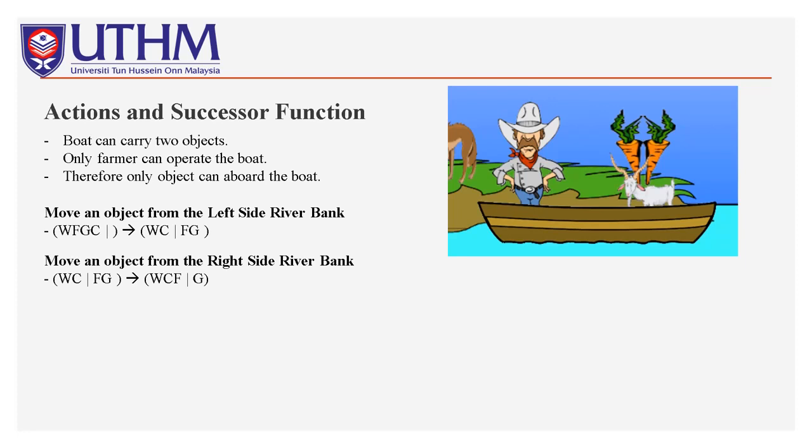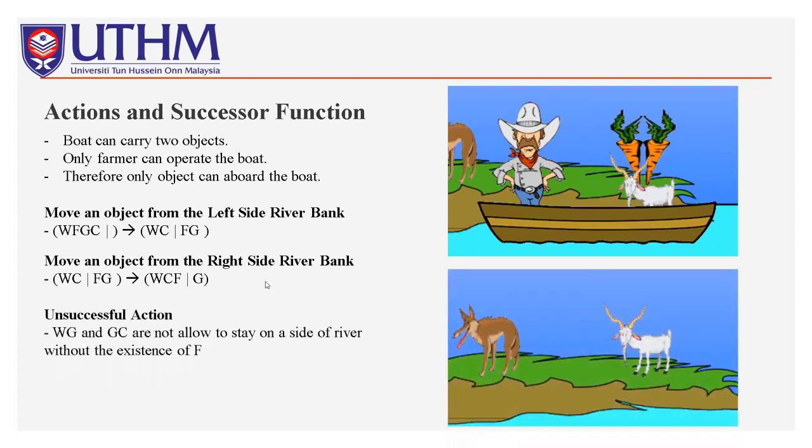If you want to move an object from the left side to the right side of the river bank, it must stay along with the farmer. So WFGC slash becomes WC slash FG, or maybe CG slash WF, as long as F is on the right side. And if we want to move an object from the right side of the river bank back, we also need the farmer to operate the boat. For our unsuccessful action, we cannot leave the wolf and goat, or the goat and carrot, on the same side of the river without supervision of the farmer.